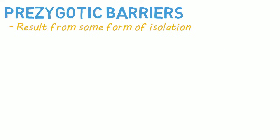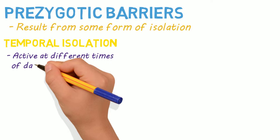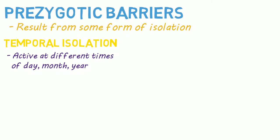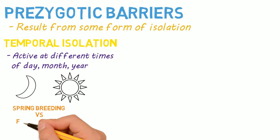Pre-zygotic barriers result when two groups within a species isolate themselves from one another in some way. Temporal isolation occurs when members of the same species are active at different times of the day, month, or even year — more specifically, they breed at different times. For example, if some members breed during the day and others breed during the night, they are isolating themselves and not sharing genetic information. The same would be true for one group breeding in the spring and the other breeding in the fall, both from the same species.